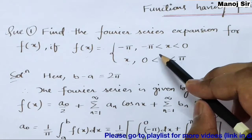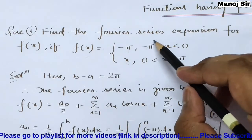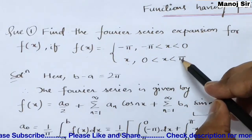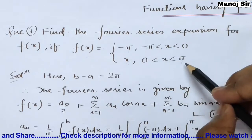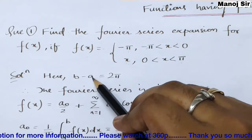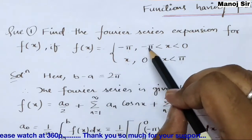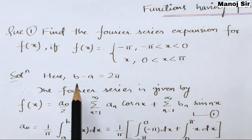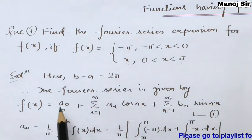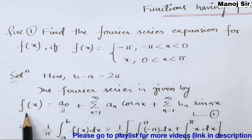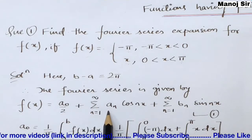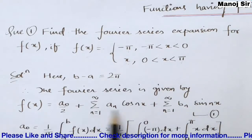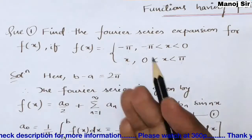The lowest limit is -π and the highest limit is π, so take a = -π and b = π. Then b - a = π - (-π) = 2π. The Fourier series is given by: f(x) = a₀/2 + Σ aₙ cos(nx) + Σ bₙ sin(nx) — call this equation 1. We find a₀, aₙ, bₙ using Euler's formula.